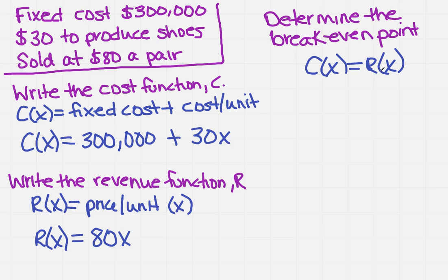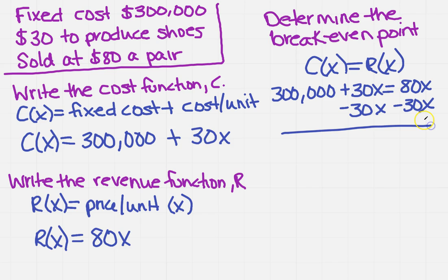So I'm just going to plug in what I said C of X is. I've got three hundred thousand plus thirty X, and that's going to equal 80X. So I need to get all the X's on one side. I'm going to subtract 30X from both sides. As with previous examples, those 30s cancel, and I'm left with just three hundred thousand on the left.